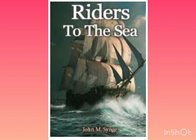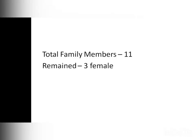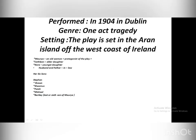Before jumping into the main section, we should know a few things about the play 'Riders to the Sea.' The play was performed in 1904 in Dublin. It is a one-act tragedy set on the Aran Islands off the west coast of Ireland.